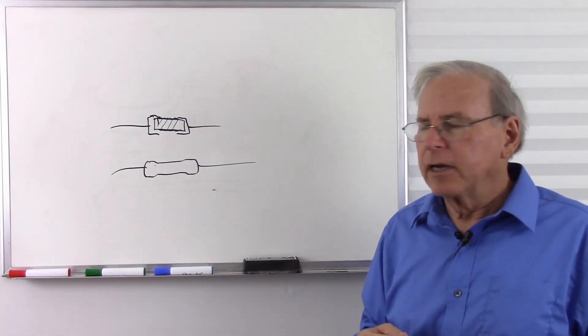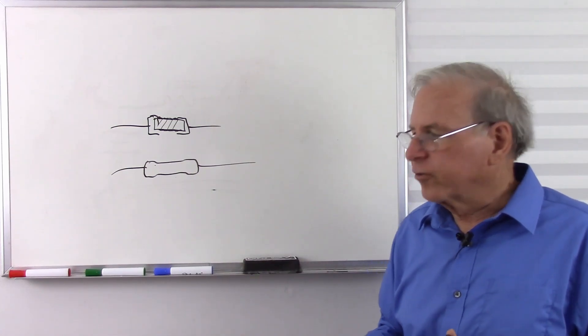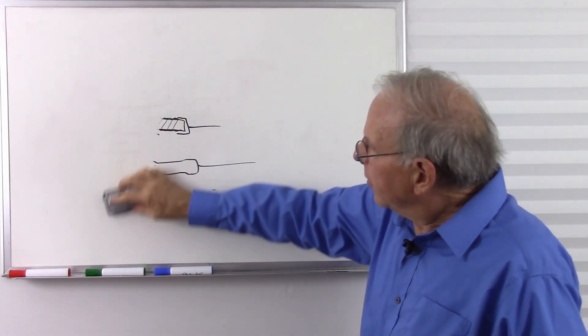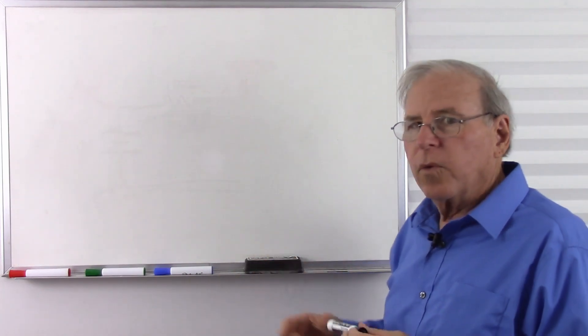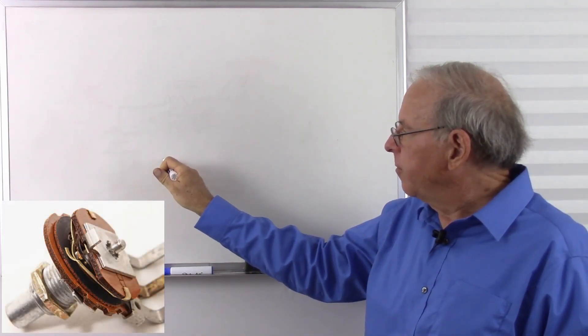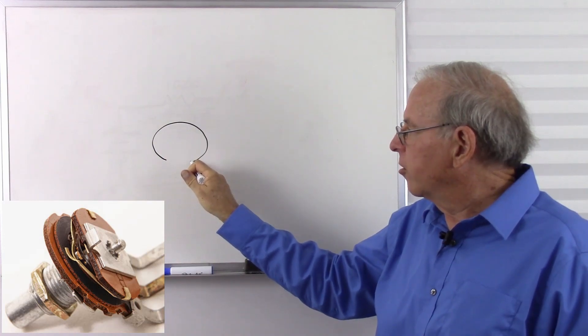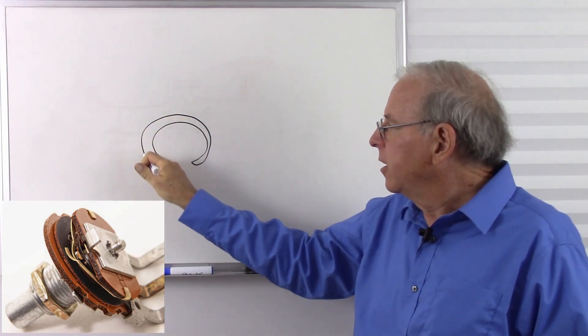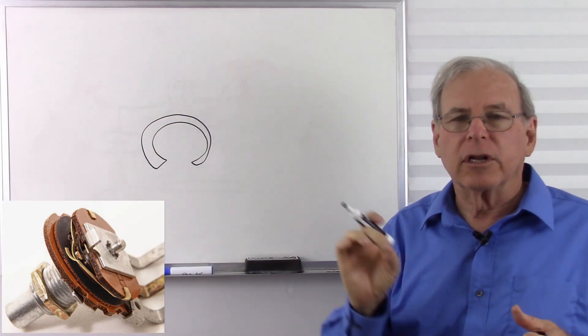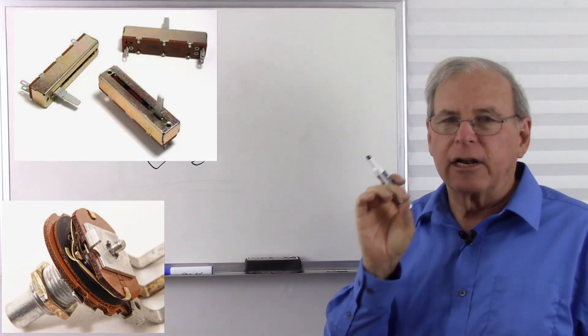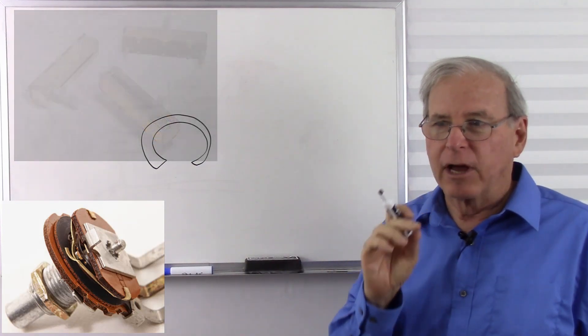Another type of resistor that's commonly used is a variable resistor. And these are made in two typical ways. One way is a carbon track resistor. So there's a piece of carbon that's made usually in a circular track. Sometimes they're in a straight line for what are called linear potentiometers, not to be confused with linear taper. We'll talk about that in a moment.